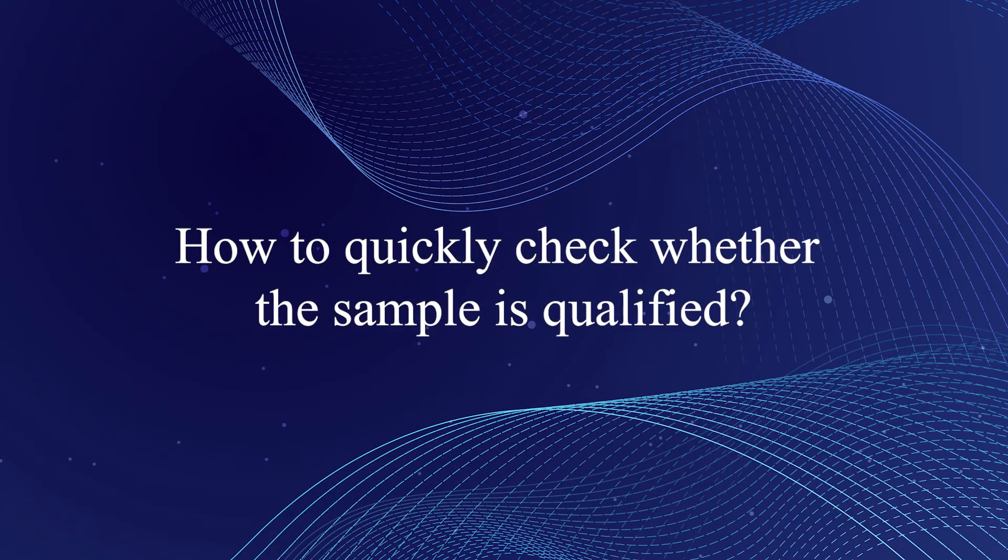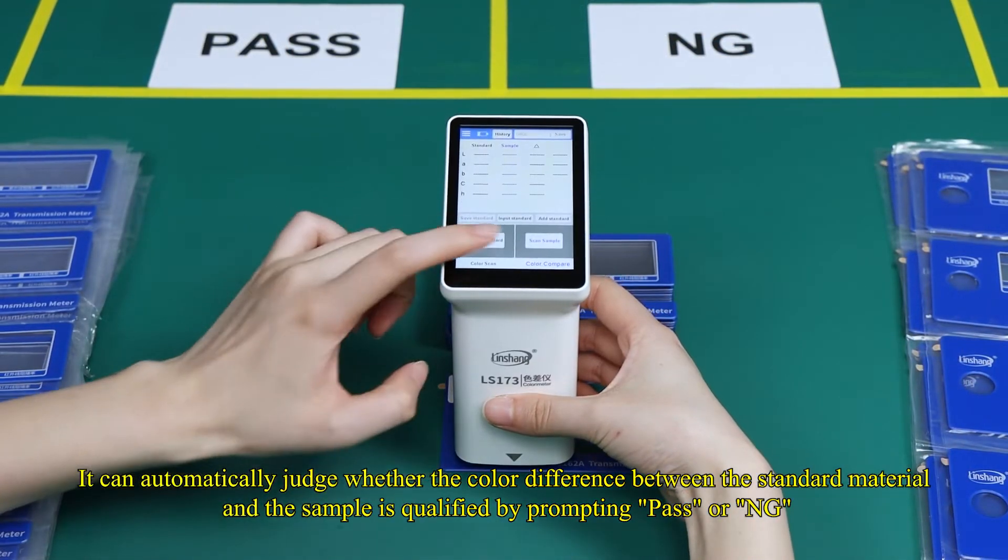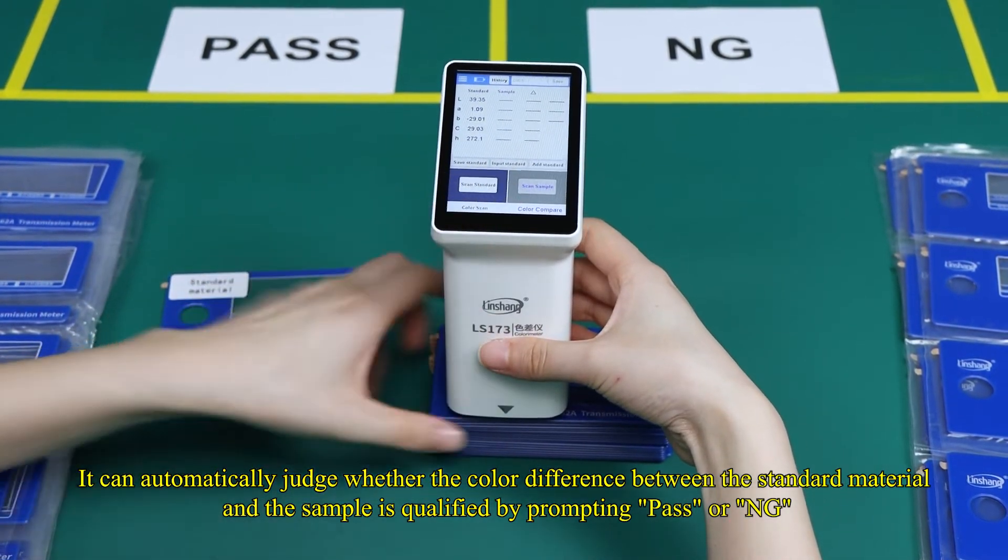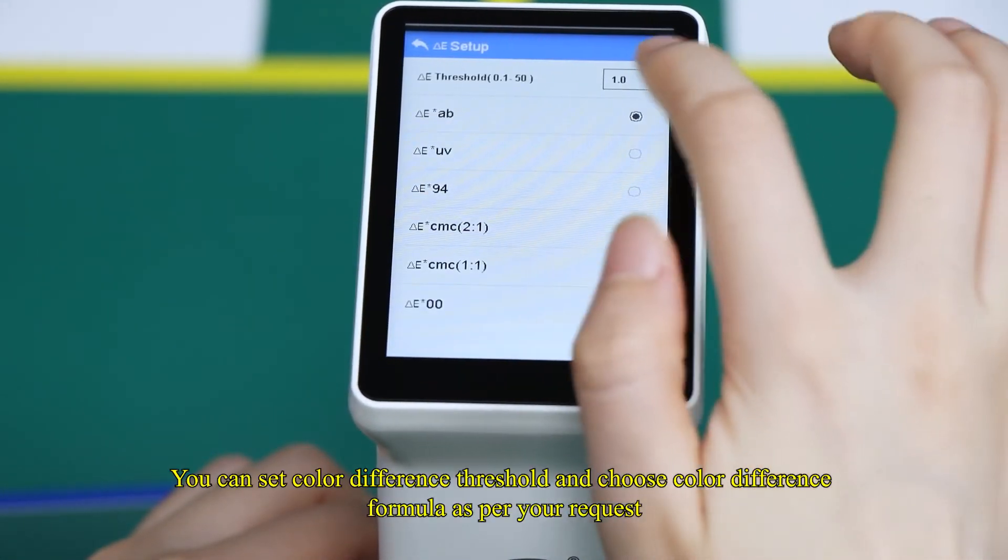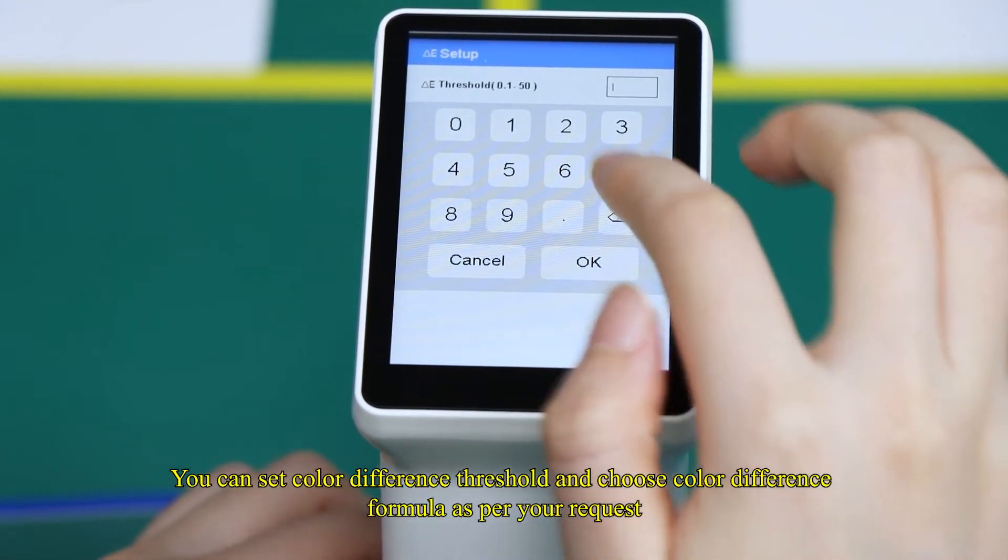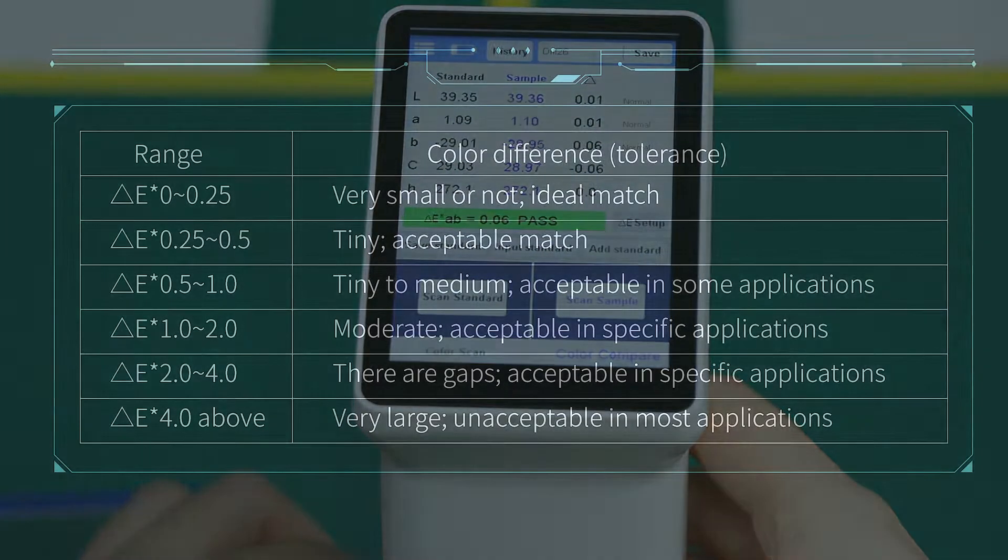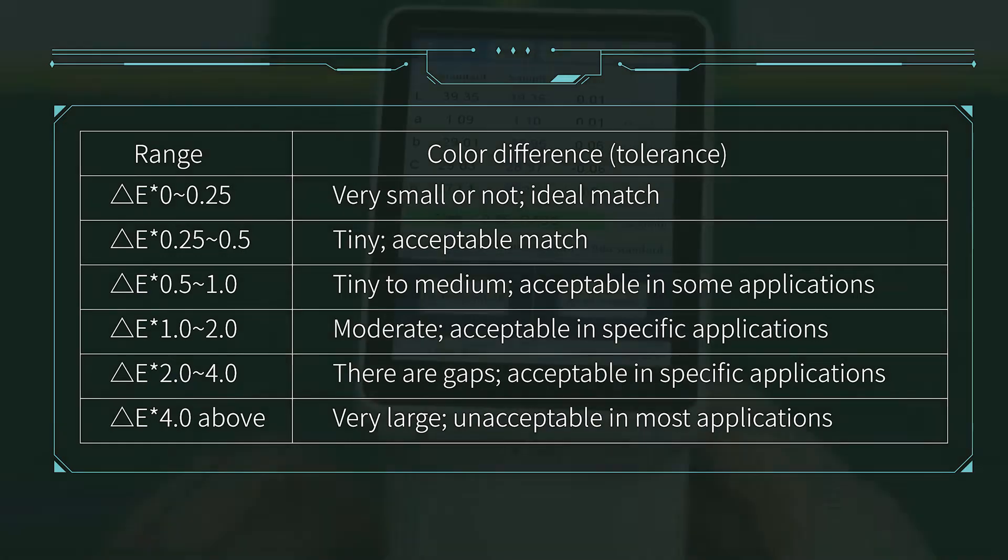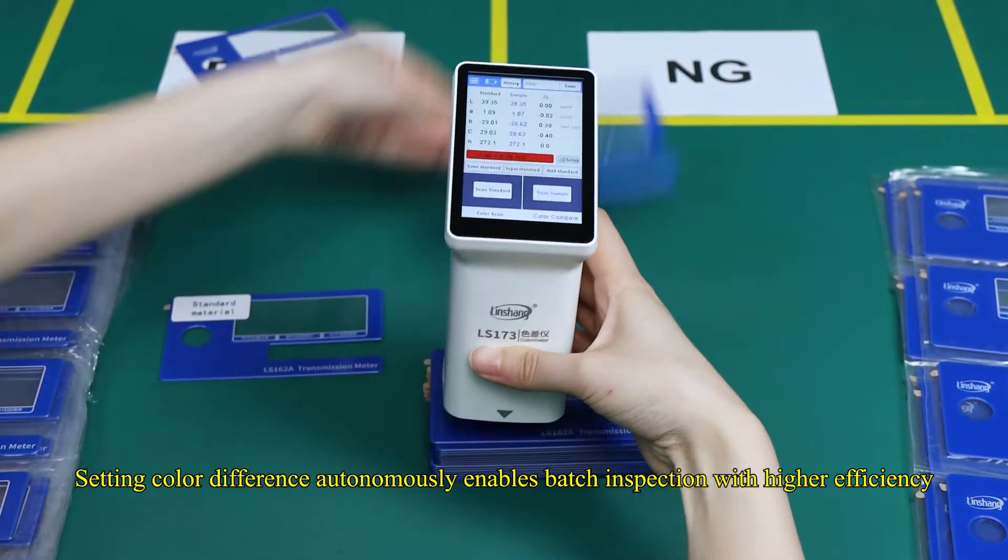How to quickly check whether the sample is qualified. It can automatically judge whether the color difference between the standard material and the sample is qualified by prompting PASS or NG. You can set color difference threshold and choose color difference formula as per your request. Setting color difference autonomously enables batch inspection with higher efficiency.